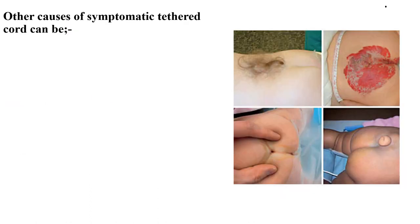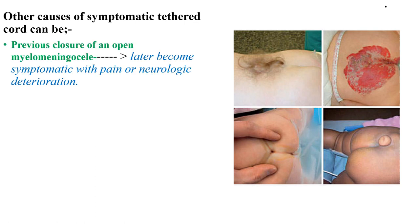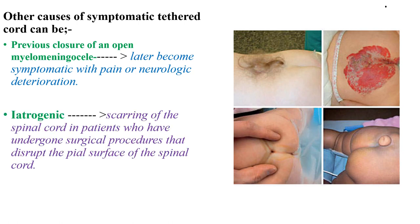Other causes of symptomatic tethered cord include previous closure of an open myelomeningocele, which later becomes symptomatic with pain or neurologic deterioration, and iatrogenic causes such as scarring of the spinal cord in patients who have undergone surgical procedures that disrupt the pial surface of the spinal cord.